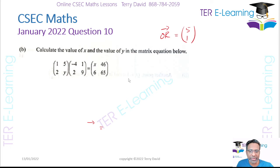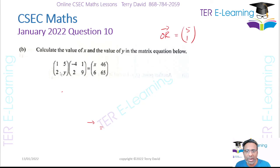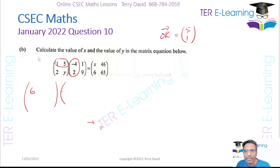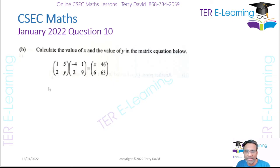The next part of the question gives us a matrix and wants us to find the values of x and y. We have a two-by-two matrix being multiplied by another two-by-two matrix, using the row-by-column rule. Taking the first row by the first column: (1 × -4) + (5 × 2) = -4 + 10 = 6. Then the first row by the second column: (1 × 1) + (9 × 5) = 1 + 45 = 46.